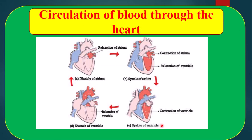Picture number C — Systole of ventricle, that means contraction of ventricle. At that time, the tricuspid valve and bicuspid valve will close, and the semilunar valve will open. So, carbon dioxide-rich blood from the right ventricle enters into the pulmonary artery and finally enters into the lung. On the other hand, oxygenated blood from the left ventricle enters into the aorta, aorta to different arteries, and different arteries to every part of our body.